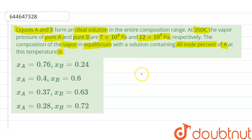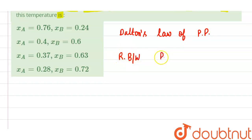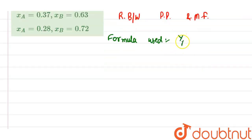The pure vapor pressures of A and B are given. Using Dalton's law of partial pressure and the relationship between partial pressure and mole fraction, we can calculate the number of moles in the vapor phase. The formula used is: y_A = P_A / P_T, where y_A is the mole fraction of A in the vapor phase, P_A is the partial pressure of A, and P_T is the total pressure of the mixture.